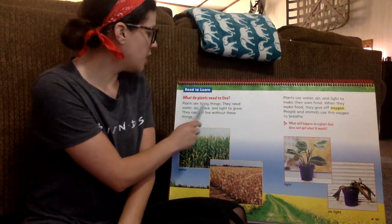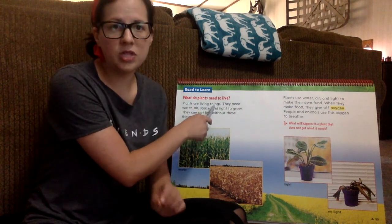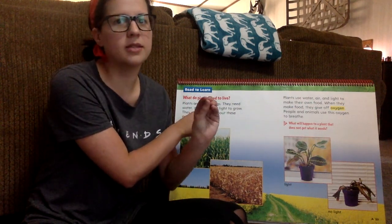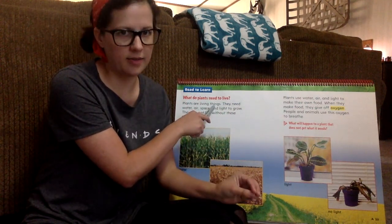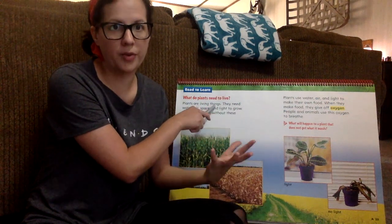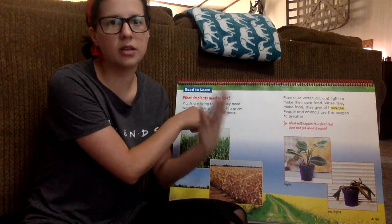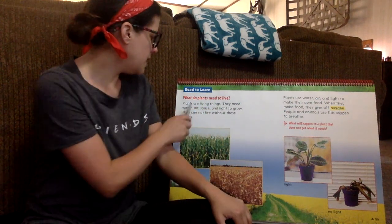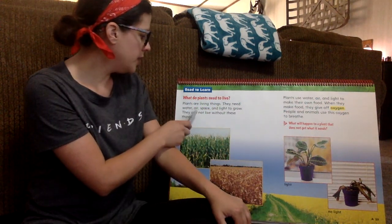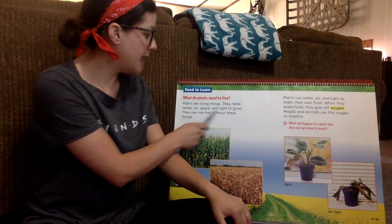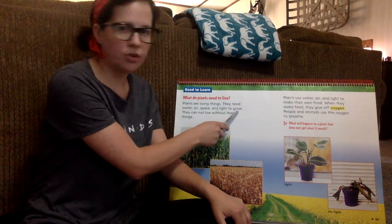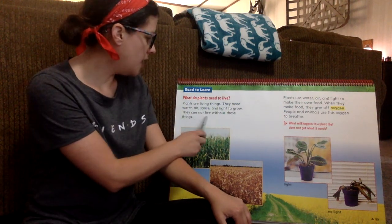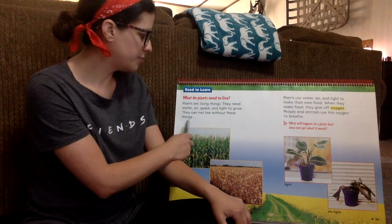Plants are living things. We have talked about things that are living and things that are not living. Plants are living — they're growing, they're changing. They need water, air, space, and light to grow. They cannot live without these things.